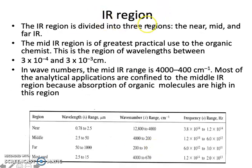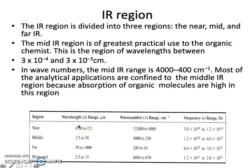The IR region in the electromagnetic spectrum is divided into three regions: near, mid, and far IR, each with corresponding wavelength, wave number, and frequency ranges. Wave number is a terminology used in IR spectroscopy — it is the inverse of wavelength, and is used more frequently than wavelength or frequency. The mid IR region is most frequently used during structural elucidation of organic molecules, because it is the region where maximum absorption takes place.